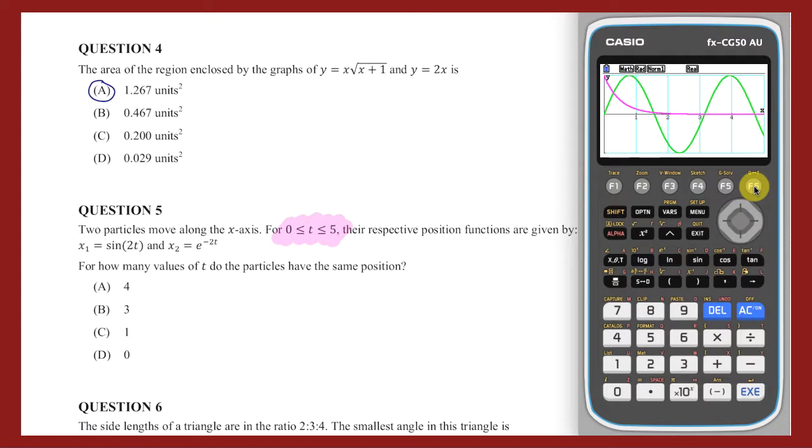I can see that the graphs of these two position functions intersect four times in the domain given, and so the two particles have the same position four times between t equals 0 and t equals 4.